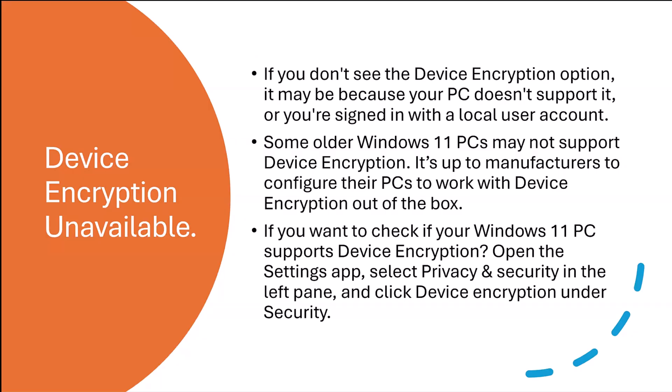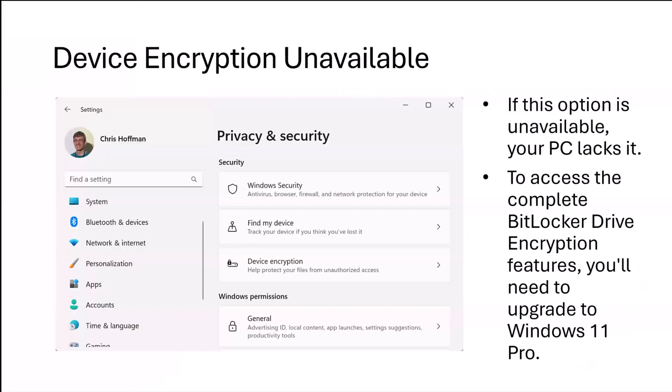If you find that device encryption is unavailable, here are some causes: your PC might not support it, or you're signed in with a local user account. Some older Windows 11 PCs may not support device encryption — it's up to the manufacturer to configure their PCs to work with it out of the box. To check if your Windows 11 PC supports device encryption, open the Settings app, select Privacy and Security in the left pane, and click Device Encryption. If this option isn't available, your PC lacks support for it. To access the complete BitLocker drive encryption features, you will need to upgrade to Windows 11 Pro.